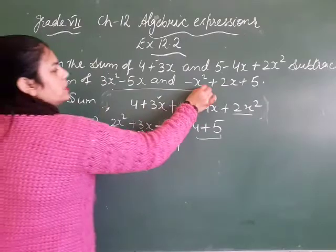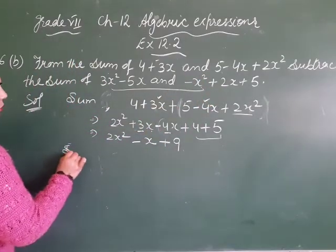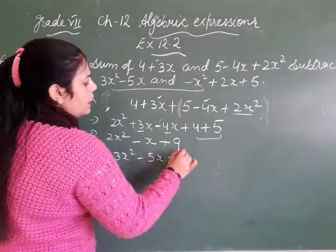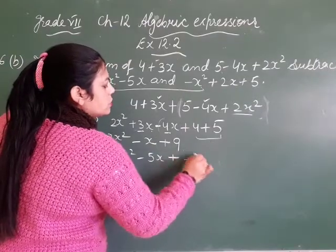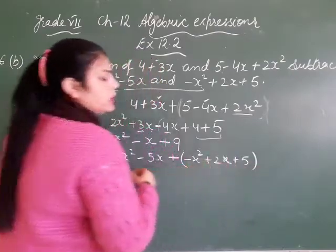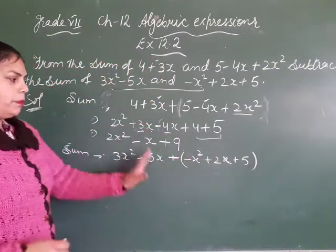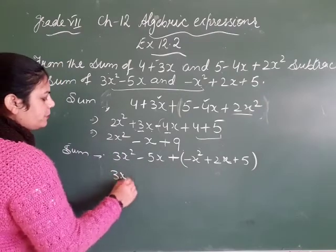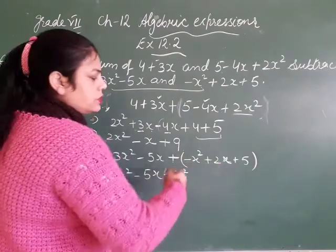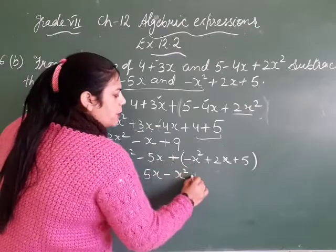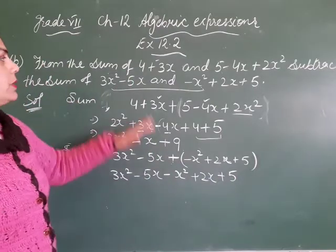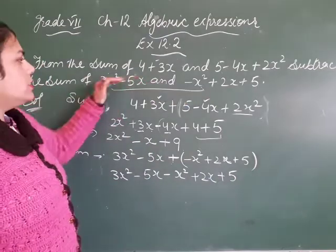Ab hum agli do expressions ka sum karte hain. Second sum: (3x² - 5x - 6) plus (2x + 5). Do signs ek saath nahi lagate, isliye hum bracket mein rakhenge. Now we open the bracket: 3x² minus 5x, plus minus 6 — bahar plus hai, toh andar koi bhi sign change nahi hoga. Plus plus, plus hi rahega. Plus 2x, plus 5.